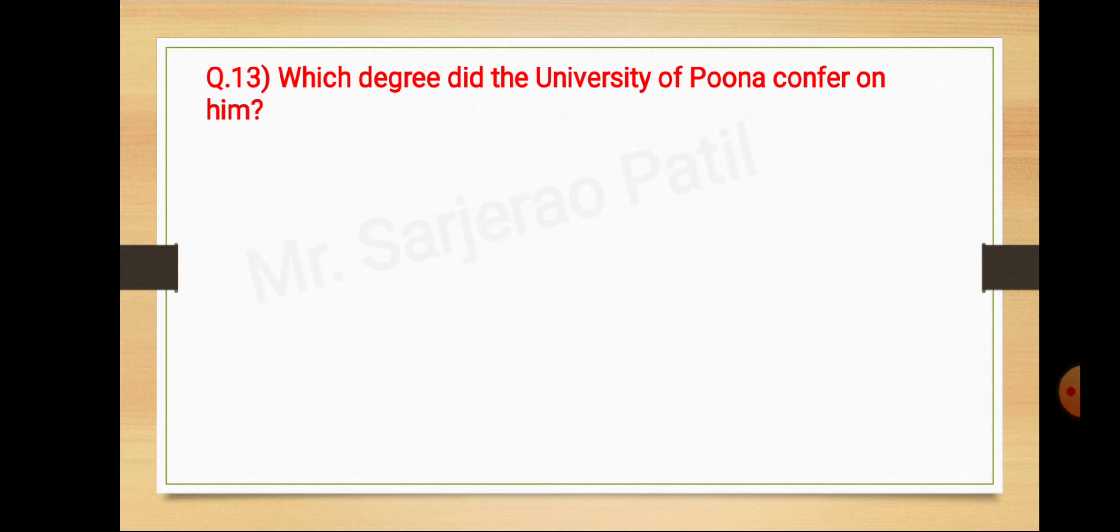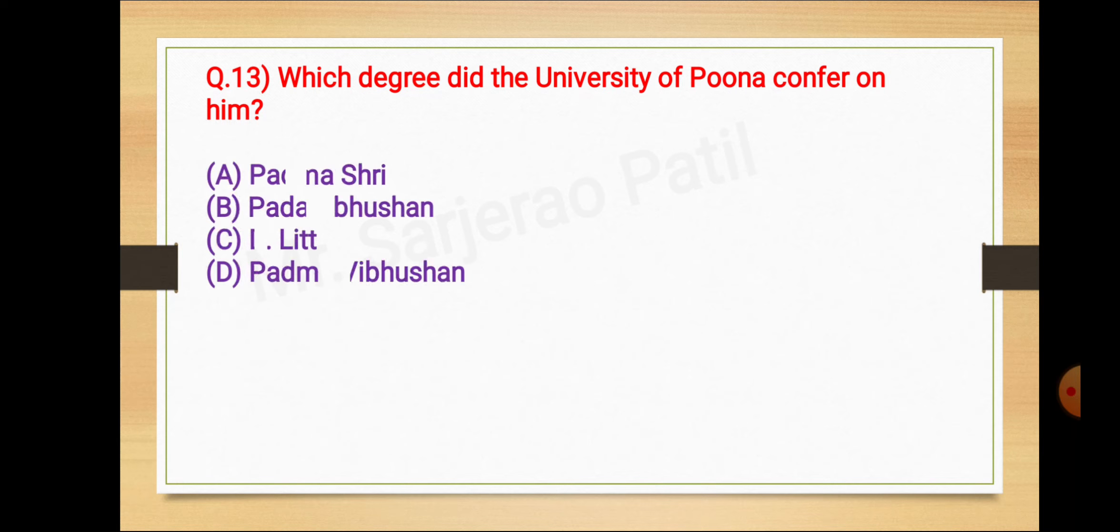Question number 13: Which degree did the University of Pune confer on him? The alternatives are A Padmashri, B Padmabhushan, C D.Lit, D Padmabhushan. The correct answer is C, D.Lit.